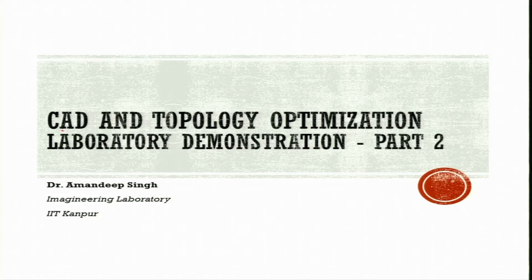This is the second part of the lecture on CAD and Topology Optimization Laboratory Demonstration. We discussed the CAD design using SolidWorks software in the previous lecture. We developed arms — I have made further steps on those arms: three arms in three different directions at three different angles — less than 45 degrees, exactly 45 degrees, and more than 45 degrees. I have also made flanges over the ends of those arms.